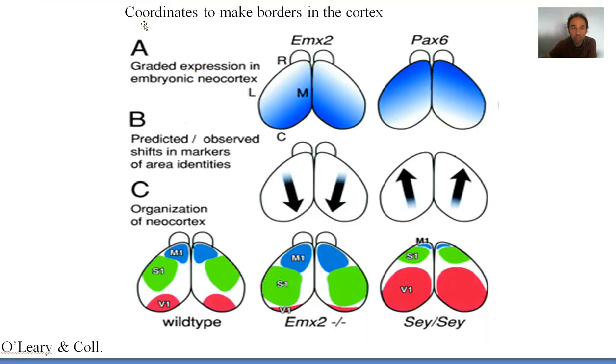More than guiding, coordinates are important to make borders between regions of the brain. This is work of O'Leary and colleagues, which have shown that if we have a correct expression of Emx2 or the wild types, and if you remove Emx2, or if you increase, what you have here is a visual cortex, instead of being very well localized. In one case, the region is completely diminished, and in the other case, it is taking over all these regions. And this can have consequences. Coordinating the brain is not only important for guidance but also to generate a specific size of the regions of the brain.